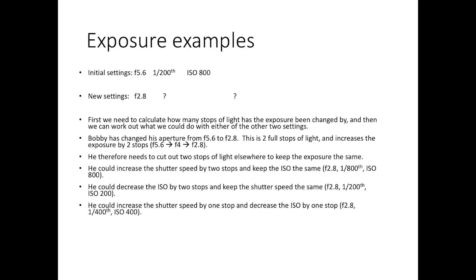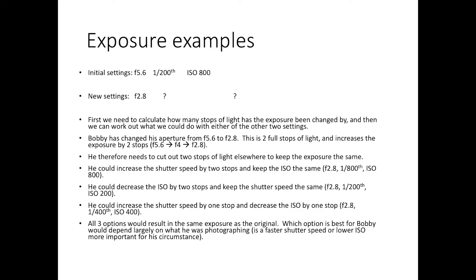Finally, he could do a combination of each — change the shutter speed by one stop and decrease the ISO by one stop — giving settings of F2.8, 1/400th of a second, and ISO 400. All three options would provide the exact same exposure as the original. The differences would be that lower ISO creates less grain, but he may need a fast enough shutter speed to freeze action, so it depends on what he's actually photographing.